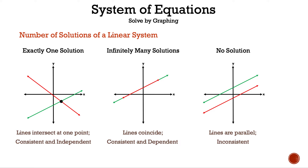Now let's take a look at the three types of graphs we could have with two linear lines. The first type is exactly one solution, where the lines only intersect at one point, which means the graph is consistent and independent. The second type is infinitely many solutions, where the lines coincide or overlap, which means the graph is consistent and dependent. The third type is no solution, where the lines never intersect because they are parallel, which means the graph is inconsistent.